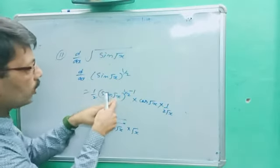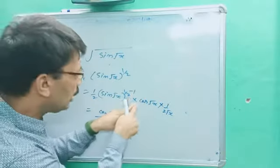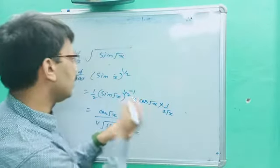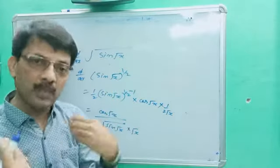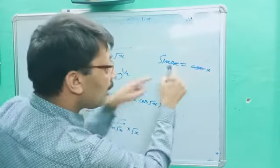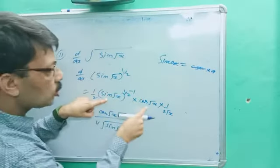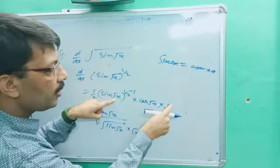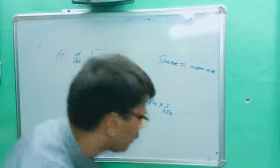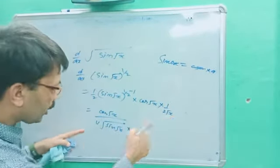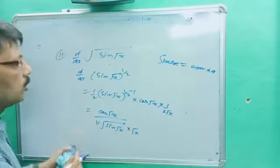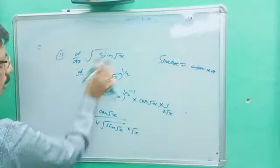Putting it all together: 1/2 · [sin(√x)]^(-1/2) · cos(√x) · 1/(2√x). This is also called the chain rule process. Simplifying: cos(√x) divided by 4√x · √(sin(√x)). This is the answer for the eleventh question.